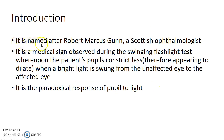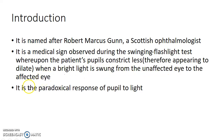Marcus Gunn pupil is named after Robert Marcus Gunn, a Scottish ophthalmologist. It is a medical sign observed during the swinging flashlight test, where the patient's pupils constrict less and therefore appear to dilate when a bright light is swung from the unaffected eye to the affected eye. It is a paradoxical response of the pupil to light.